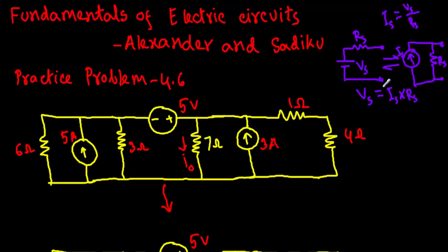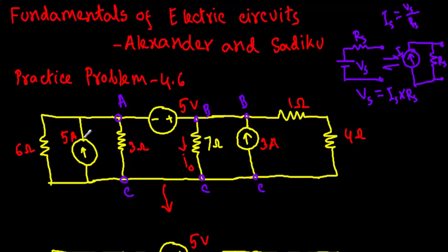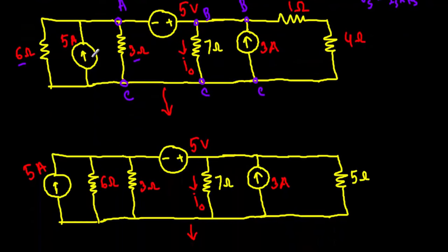Let's say this terminal is terminal A, this path is terminal A, this is terminal C, this is terminal B, and this is terminal C — as we are moving along the same wire. Looking at terminals A and C, you will see that a 5 ampere current source is connected in parallel with two resistances: one is 3 ohm and another is 6 ohm. I will rearrange by taking this 6 ohm resistor to the right side of the current source.